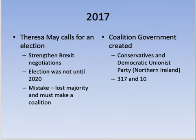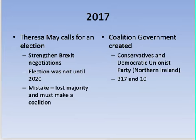In 2017, Theresa May called for an election, thinking it would strengthen her party and the Brexit negotiations. There wasn't supposed to be an election until 2020, but the prime minister can call one early. She actually lost her majority and had to form a coalition with the Democratic Unionist Party — 317 Conservative seats plus 10 DUP seats from Northern Ireland — the opposite of what she intended.